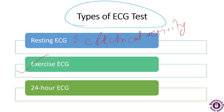The third type is 24-hour ECG, which is conducted for about 24 hours. The heart's electrical impulses are measured by a device called the Holter monitor.